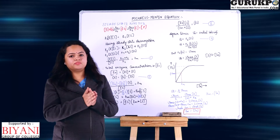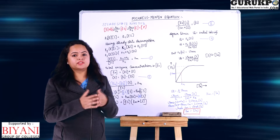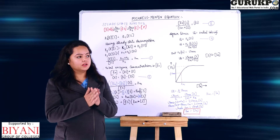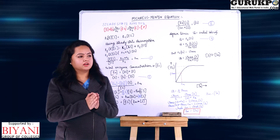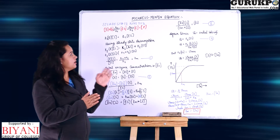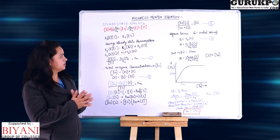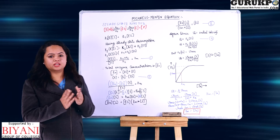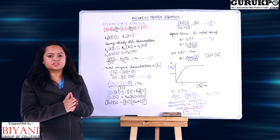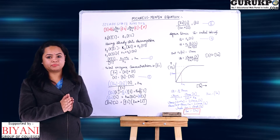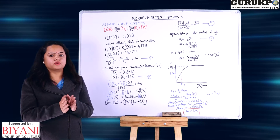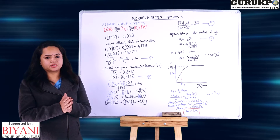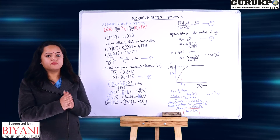First of all we must be familiar about what is the Michaelis-Menten equation. German biochemist Michaelis and Canadian physicist Menten gave this biochemical equation, which is the most acceptable model for calculation of concentration of enzyme and substrate for any industrial purpose.